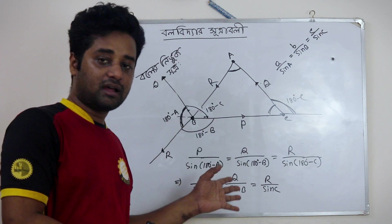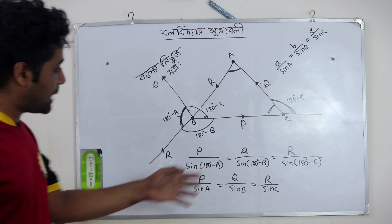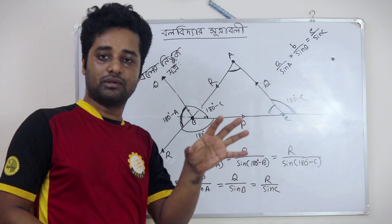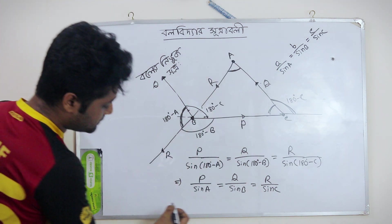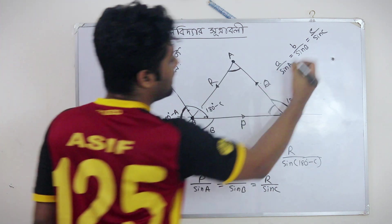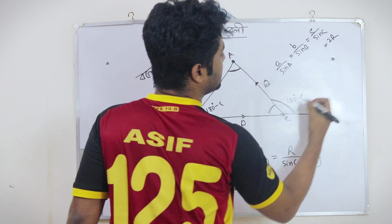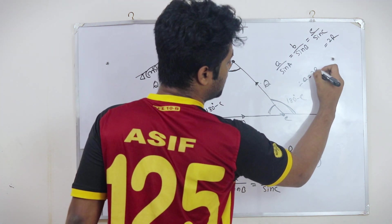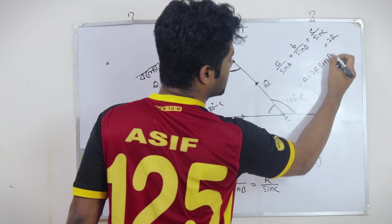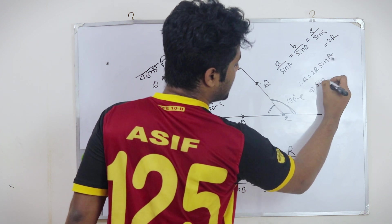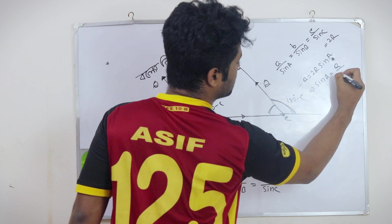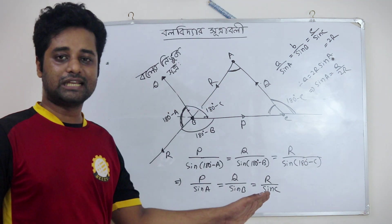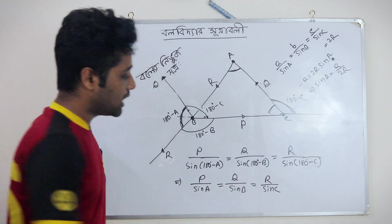Now I am using the sine rule of sin. So sin A is equal to 2R. Sin B is equal to 2R, sin C is equal to 2R.